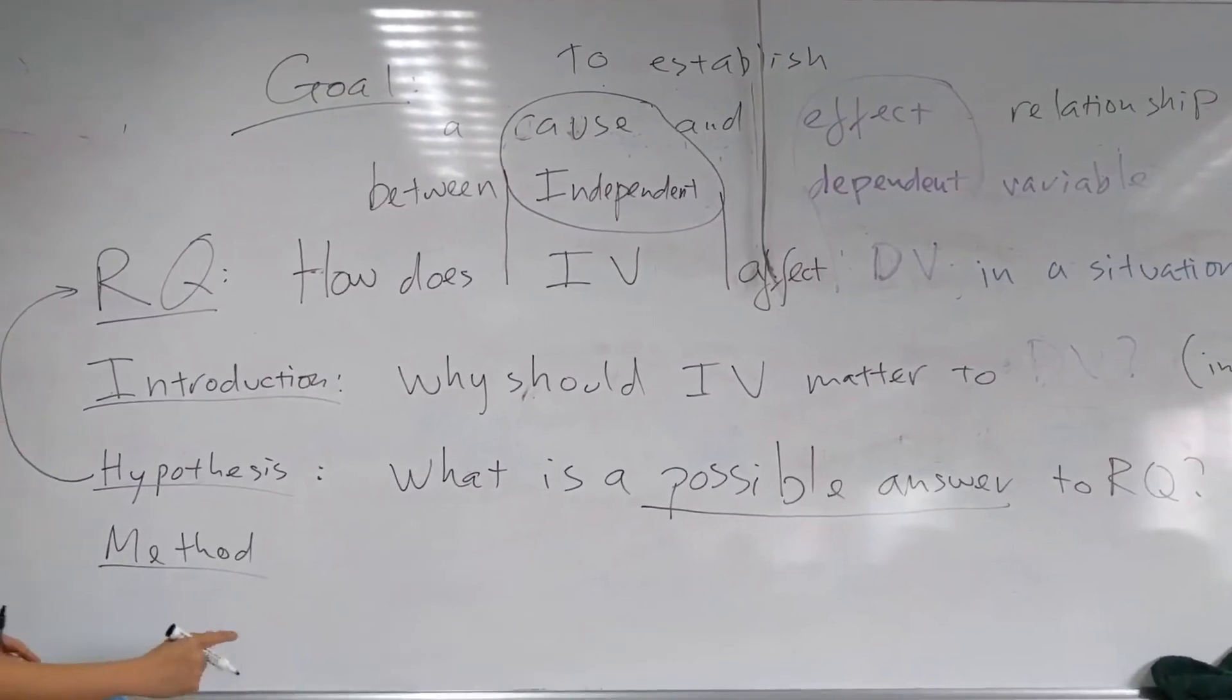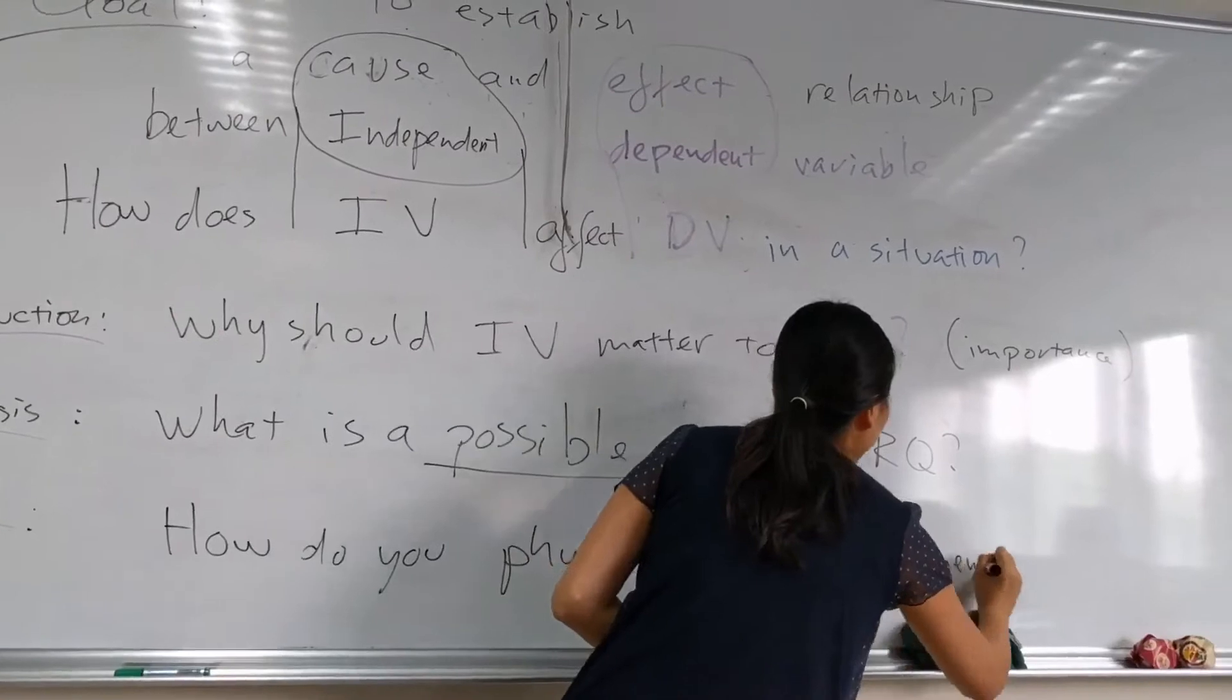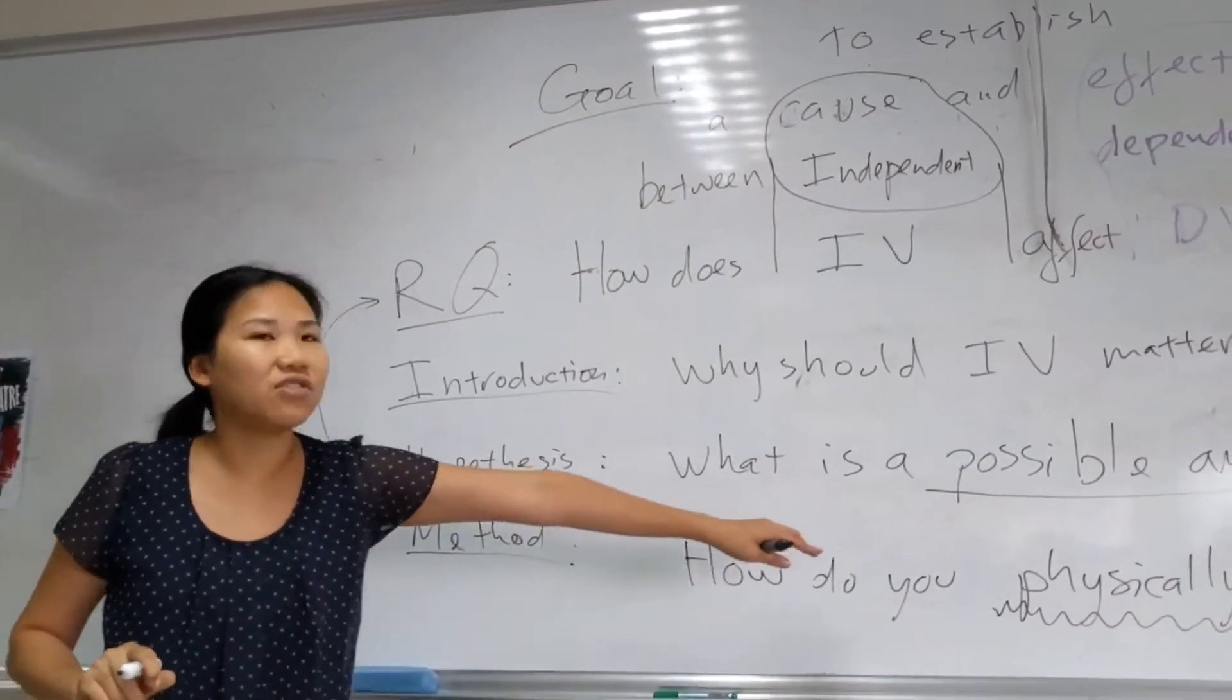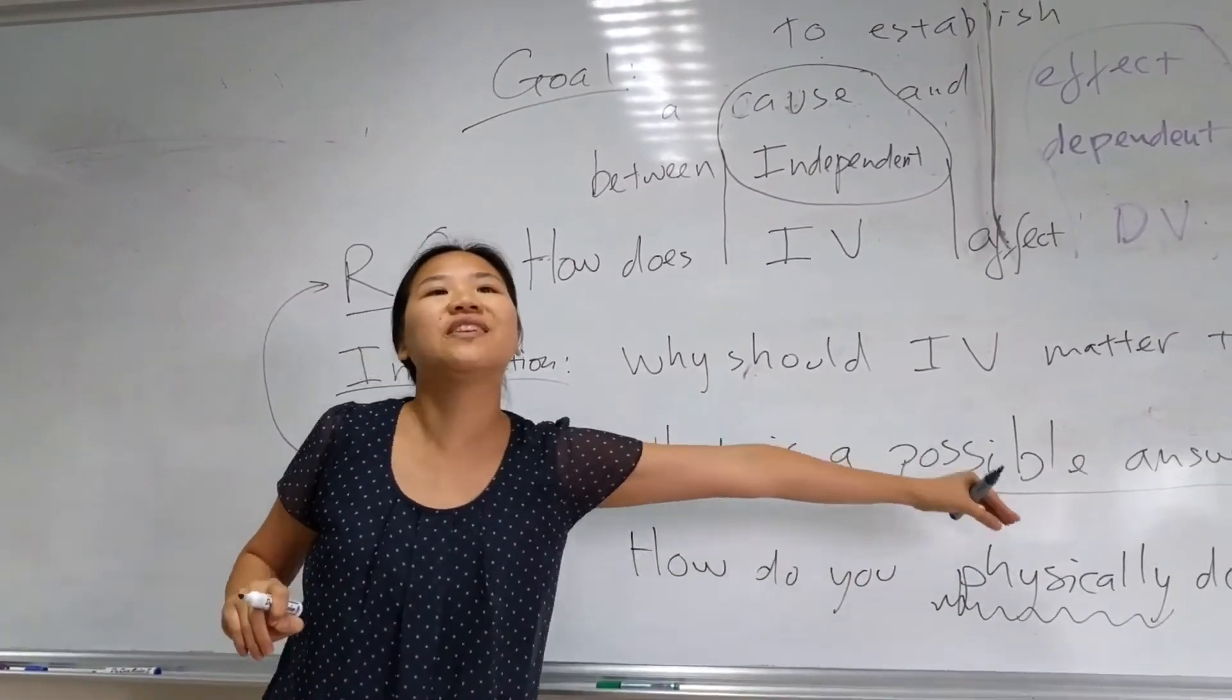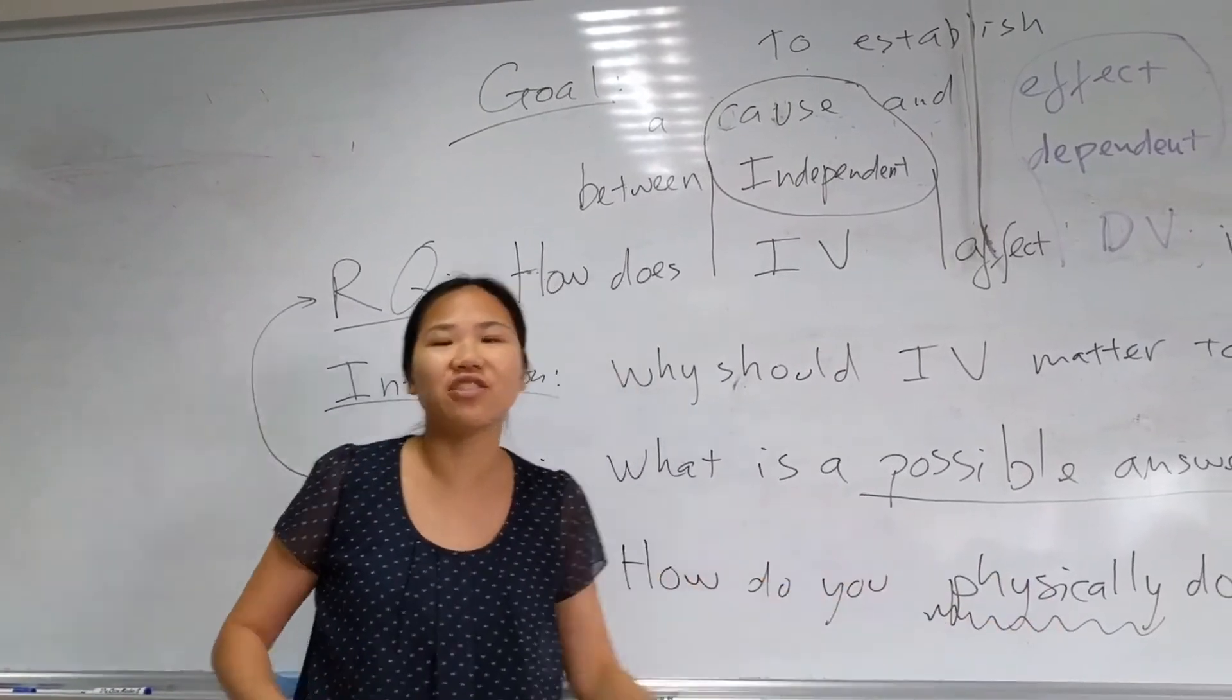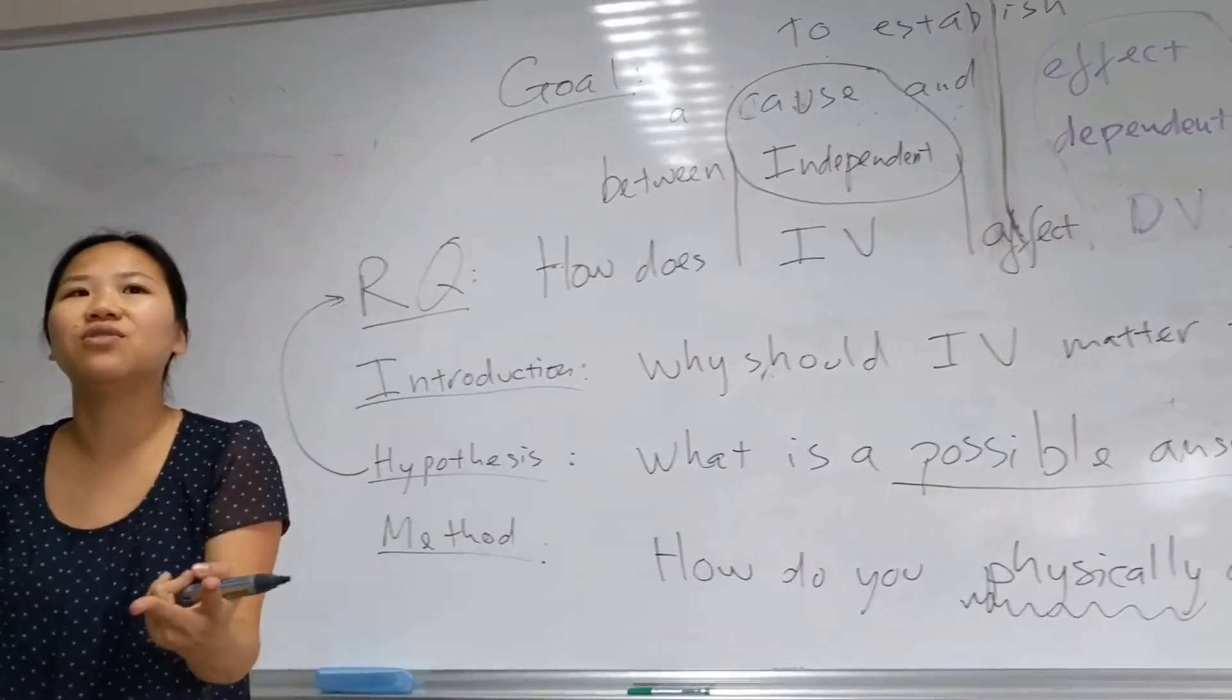Then moving on to the method section. The method question is pretty much just have a method, step by step, which is very good. But then you don't explain how do you physically measure something. And when you want something physically measured, you need to say what equipment you use, how many milliliters of something you use.